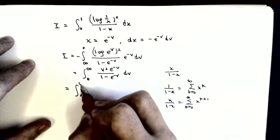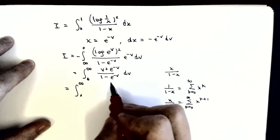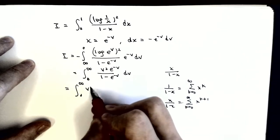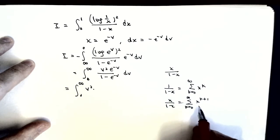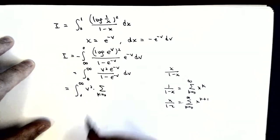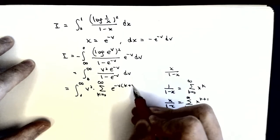Now we use this series in our integral. When x is e to the minus v, we just replace x here. So we will have sum from k equals 0 to infinity of e to the minus v to the power of k plus 1.